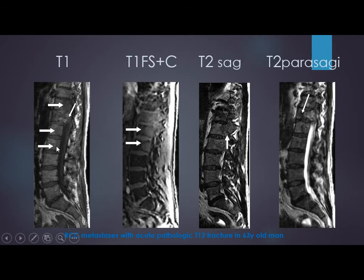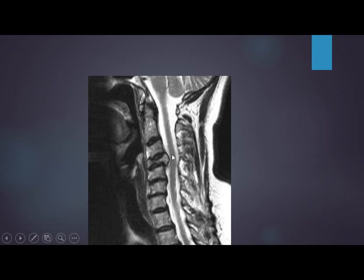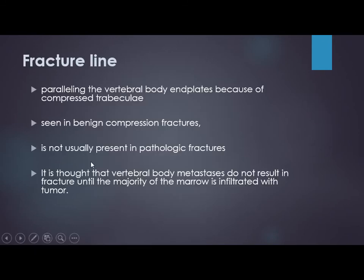In this patient with multiple metastases, there are expansile lesions at L1, L2, T11, and pathological fracture of T12 — it is bulged and infiltrated, compressing the spinal cord, with the pedicle also involved. There is usually no fracture line because all trabeculae have been destroyed and infiltrated — fracture in metastasis does not occur until late in disease when trabeculae are fully destructed. We see decreased height, posterior bulging, and no fracture line — this is regarded as pathological fracture.